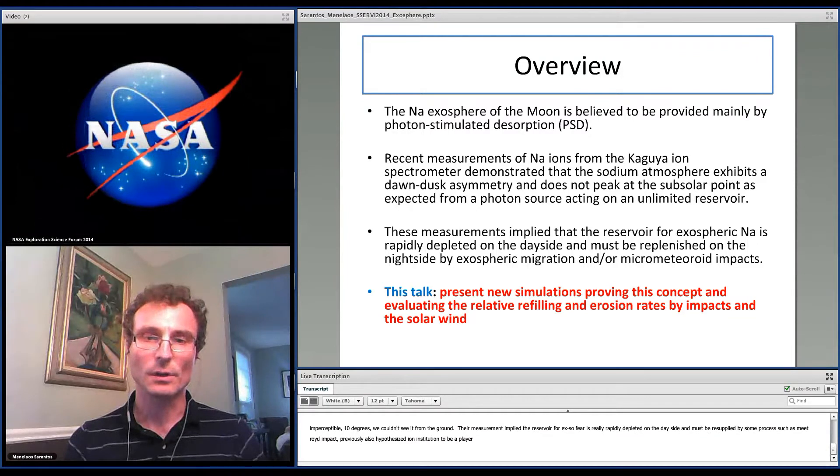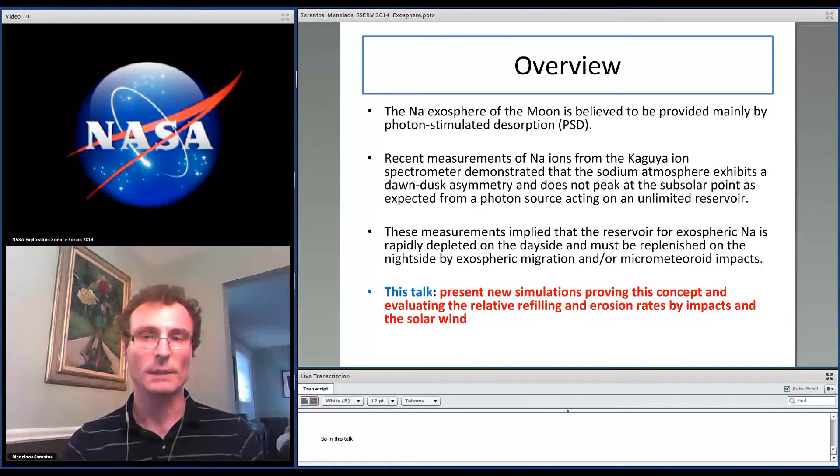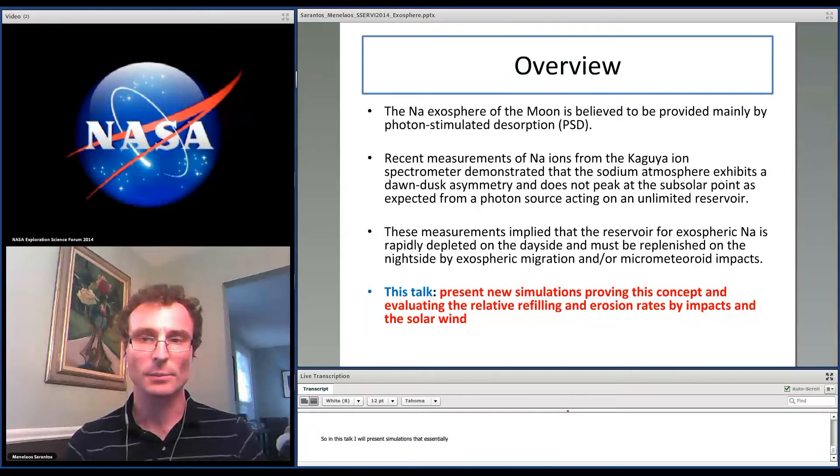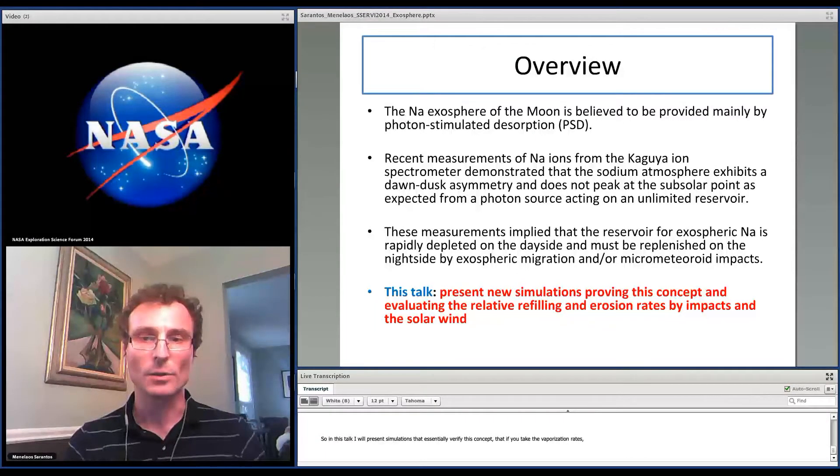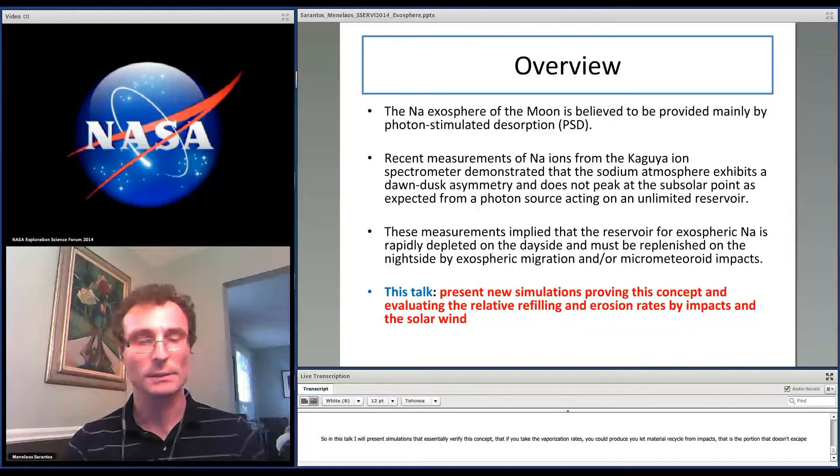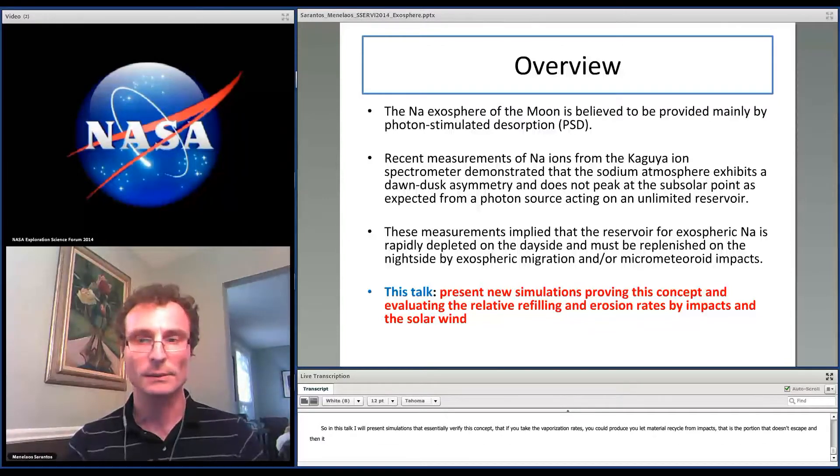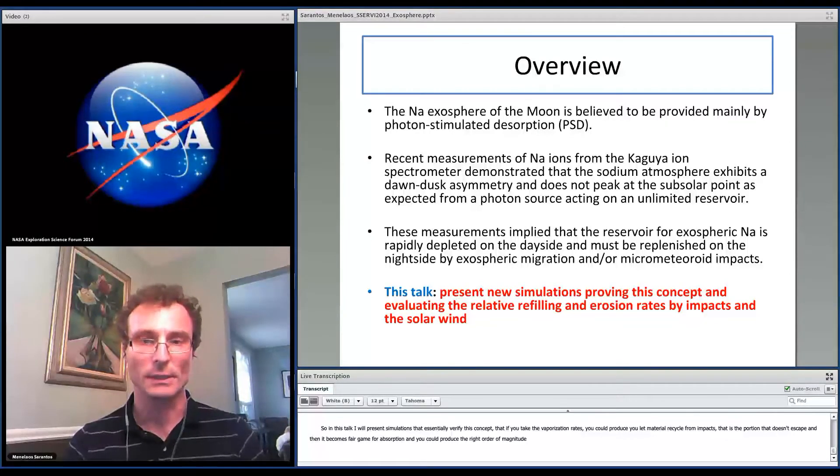So in this talk, I will present simulations that essentially verify this concept that if you take realistic impact vaporization rates and let material recycle from impacts—that is, a portion that doesn't escape—it becomes fair game for photo-stimulated desorption. It turns out you can produce the right order of magnitude for the total amount of sodium and potassium in the exosphere. And I will also discuss the role of the solar wind.